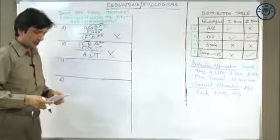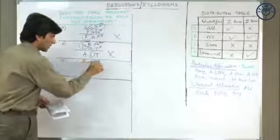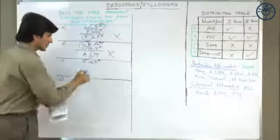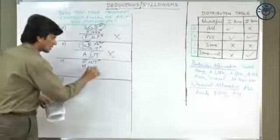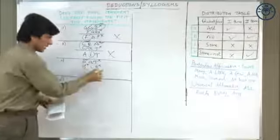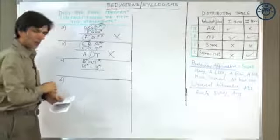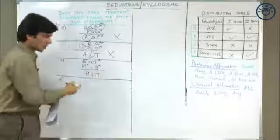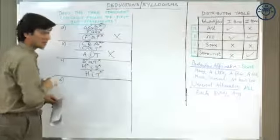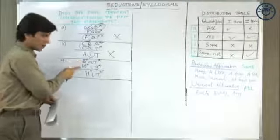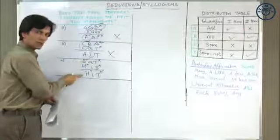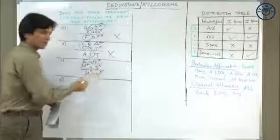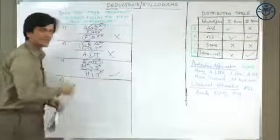Part B or C: all burgers are tasty — distributed, not distributed. Some hot dogs are burgers — both not distributed. The inference drawn is some hot dogs are tasty. Since one is universal and the other is particular, the conclusion must be particular. Both premises are affirmative, so we derive an affirmative conclusion. Hot dogs and tasty are both not distributed in the conclusion — so this is a valid inference.